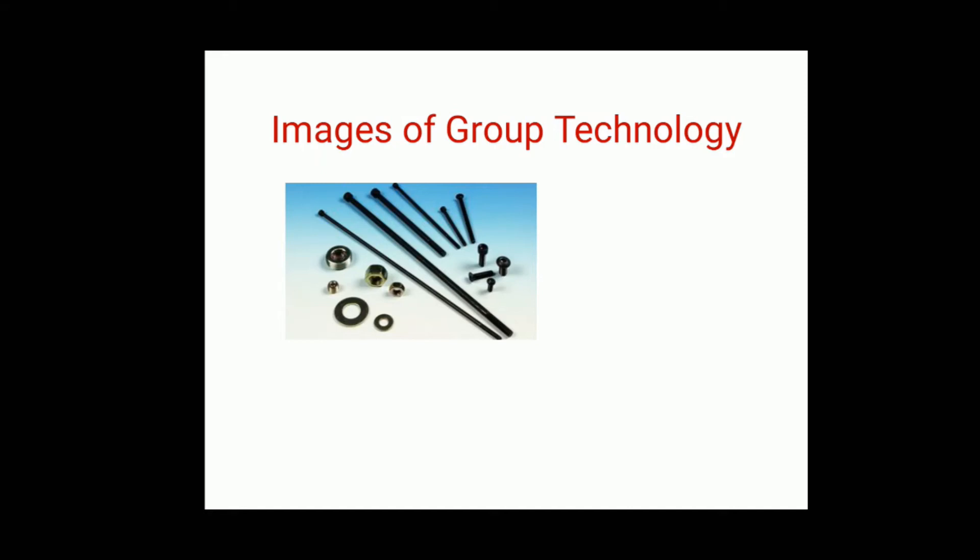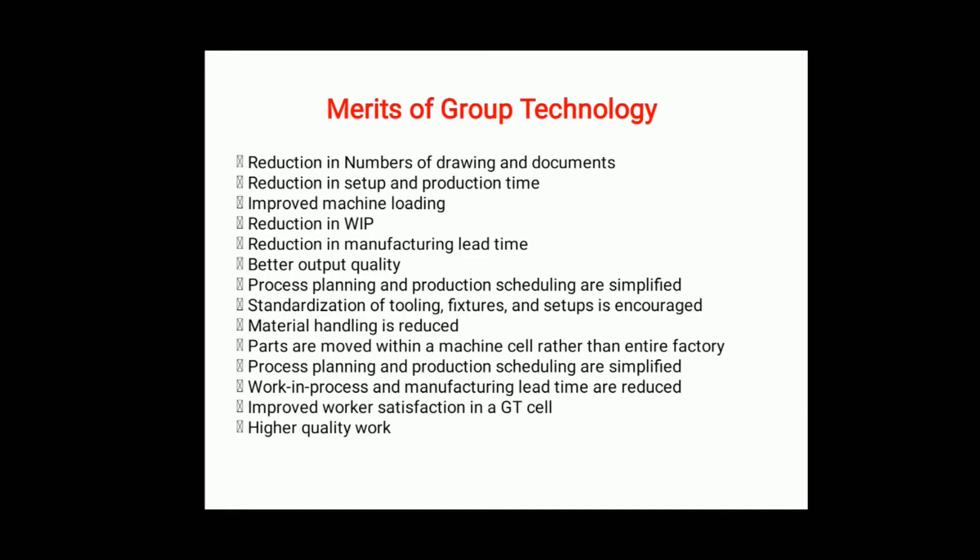The second method, composite part, uses the design of the part to create separate groups. Production flow analysis and classification/codification are the remaining methods, which we will cover in the next slide. Now we will look at the advantages of group technology.